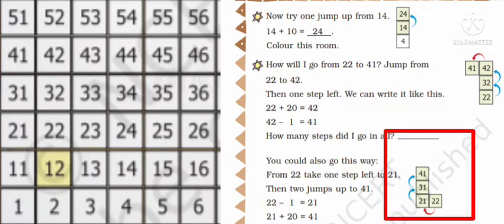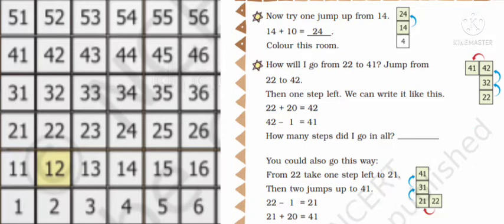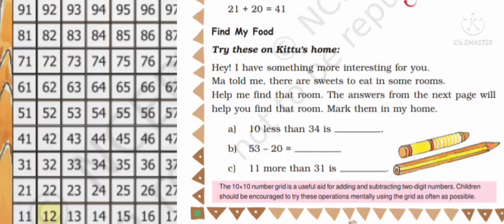That's also three steps. Now did you understand how to do addition and subtraction with this number chart? Now Kittu is asking for another help. Find my food.